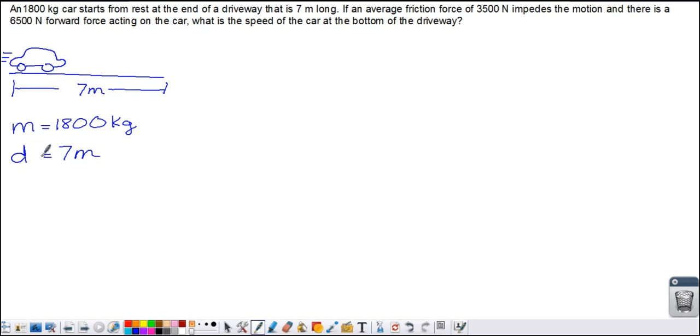Now, the average friction force. I'd say it's static friction because it's rolling. If you say kinetic, that's okay as well. But it's 3,500 newtons. And so in my picture, that force is going to be impeding the motion, so it's going to be going back. And we also have a 6,500 newton force, forward force acting on the car. What is the speed of the car at the bottom? So we're trying to find the final velocity of this car.